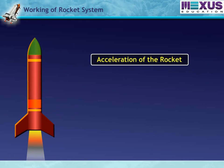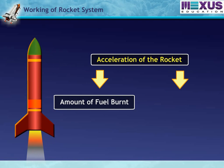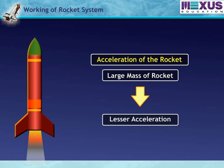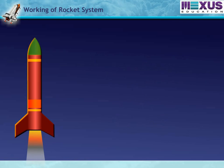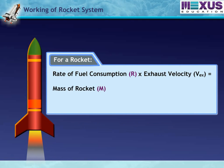For a rocket, the acceleration is determined by the amount of fuel burned and the exhaust velocity. Acceleration of a rocket is also affected by mass. The rate of fuel consumption multiplied by exhaust velocity is equal to the mass of the rocket multiplied by acceleration.